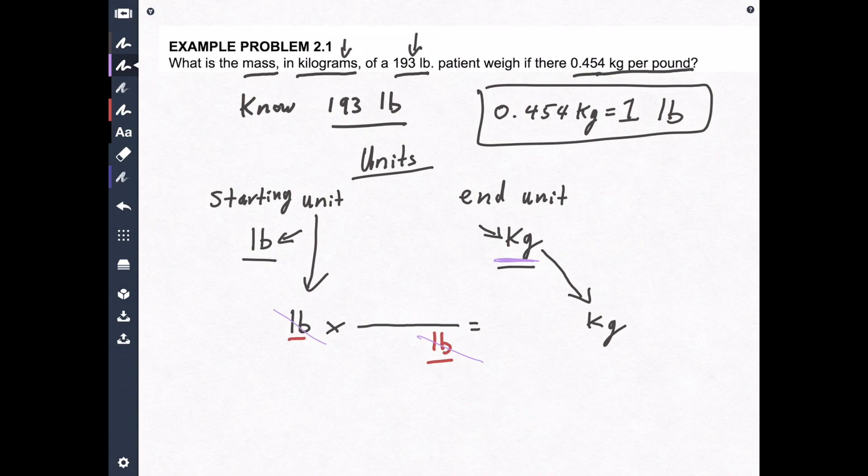So now, the unit that you want, kilograms, should go up here. Kilograms goes up there. So now, if we do this transformation, pounds multiplied by kilograms divided by pounds, this unit does not cancel and ends up in your answer. So the question is set up properly.